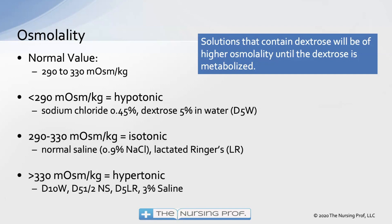Solutions containing dextrose are a little different. Once administered, the liver metabolizes the dextrose — takes it out and puts it into storage — so it's no longer part of the osmolality equation. That's why D5W is actually isotonic or close to hypertonic in the bag, but once given to the patient, the dextrose is metabolized and we're left with just water, which is hypotonic compared to blood.